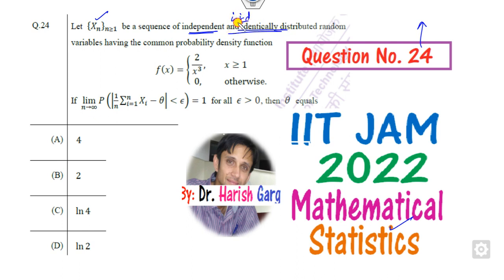Which has the common probability density function here, and if limit n approaches infinity of this goes to 1, then you have to find the value of this theta.